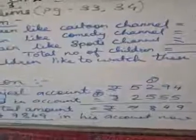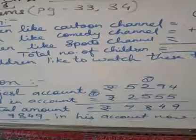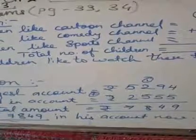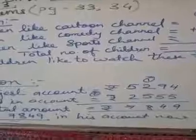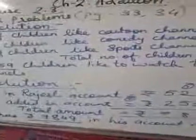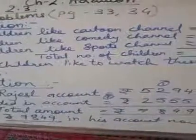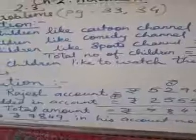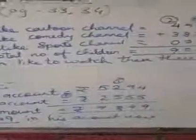So he has rupees 7,849. Come on, copy down this sum. I will wait. Hope you are understanding the sum clearly.